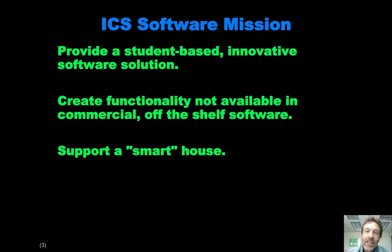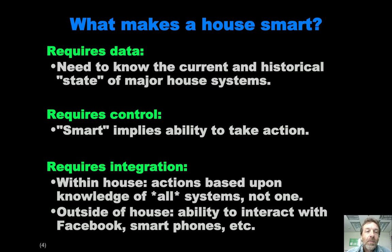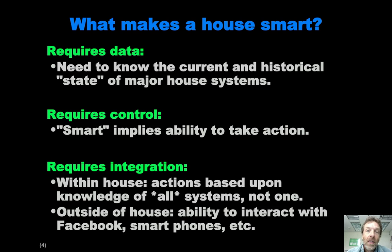The easiest way to get there is to think about what it would mean for the house to be smart. What makes a house smart? First, it would require data — we need to know something about the current and historical state of the major house systems. Once we have that data, we have to do some kind of computation on it, simple or complicated. And in order for the house to be smart, we have to have some kind of resulting control. If we can't act on the data, then the intelligence of the house is severely limited.